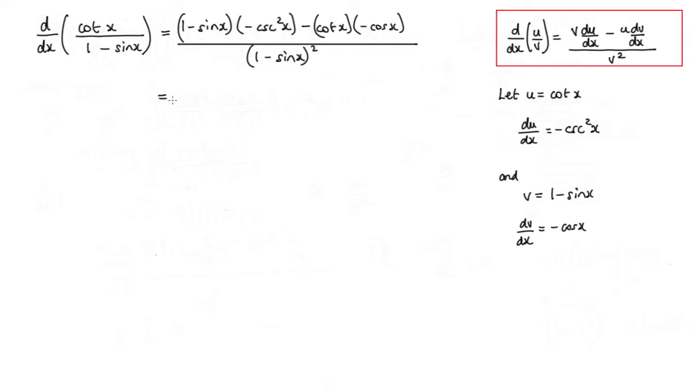Now we can actually simplify a little bit here. So I've got a negative here and a negative here, so I'll make a positive. So I'll write that as cot x cos x.